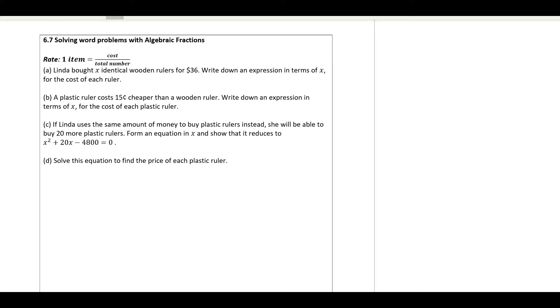First, to find the rate of one item. Rate means how much is it per item. So the one item cost is the total cost divided by the total number of things that you buy.